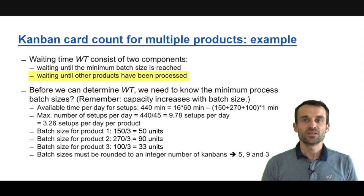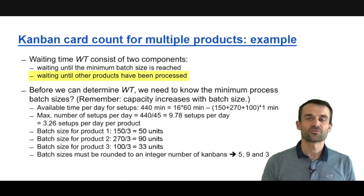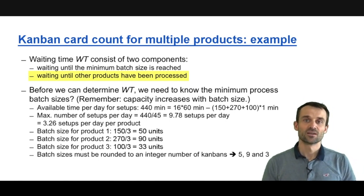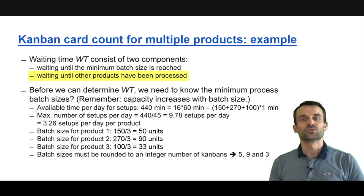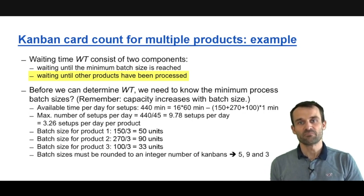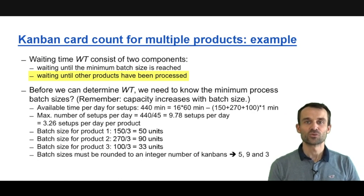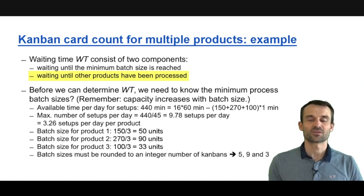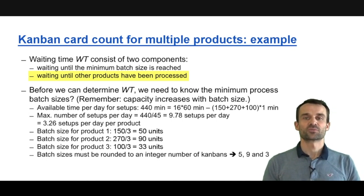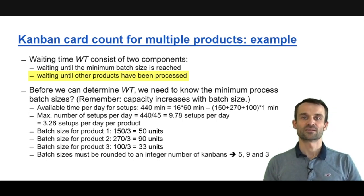The second element of waiting time is that even if there are enough Kanban cards available to start producing, we may still be waiting because other products are being produced first. So we're waiting in the queue in front of the machine with our Kanban cards available, but other products are being processed first.